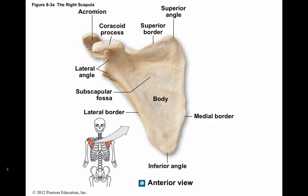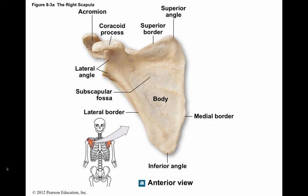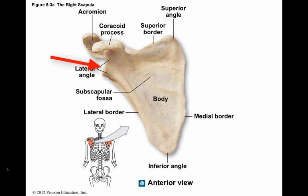The scapula has a body on the anterior surface, bordered by three sides in the shape of a triangle: a superior border, a medial border, and a lateral border. Muscles that position the scapula attach along these edges. The corners of the triangle are called the superior angle, the inferior angle, and the lateral angle. The lateral angle, or head of the scapula, forms a broad process that supports the glenoid cavity.